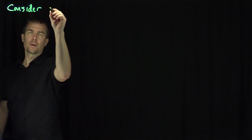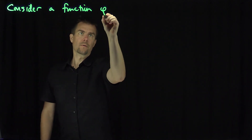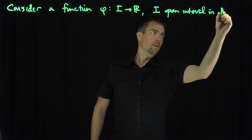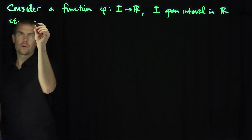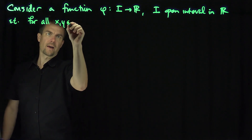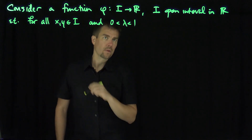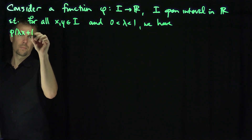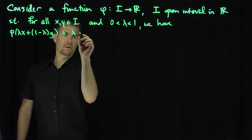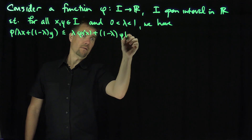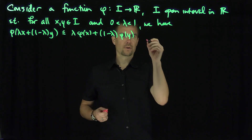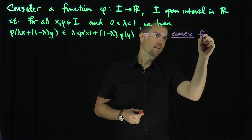Hello students, in this video we'll discuss Jensen's inequality. Let's consider a function phi which maps an open interval i into R, such that for all x and y in i and lambda between 0 and 1, we have that phi of lambda x plus 1 minus lambda y is less than or equal to lambda phi of x plus 1 minus lambda phi of y. Functions that satisfy this inequality are called convex functions.